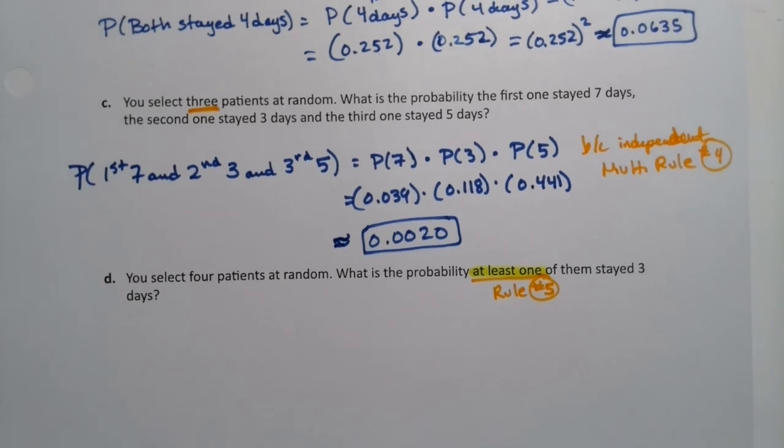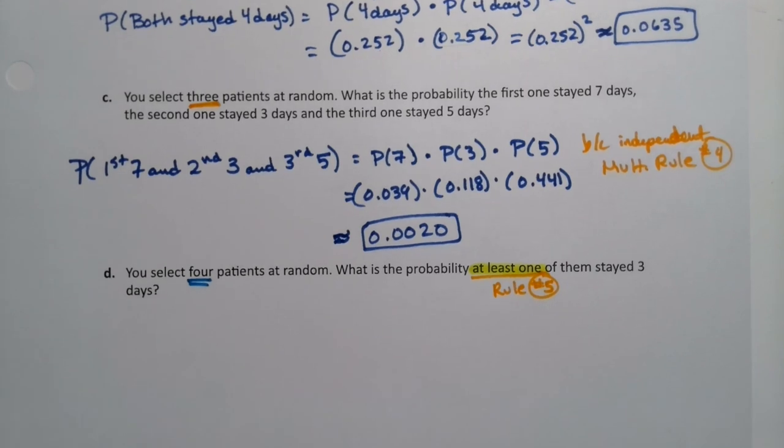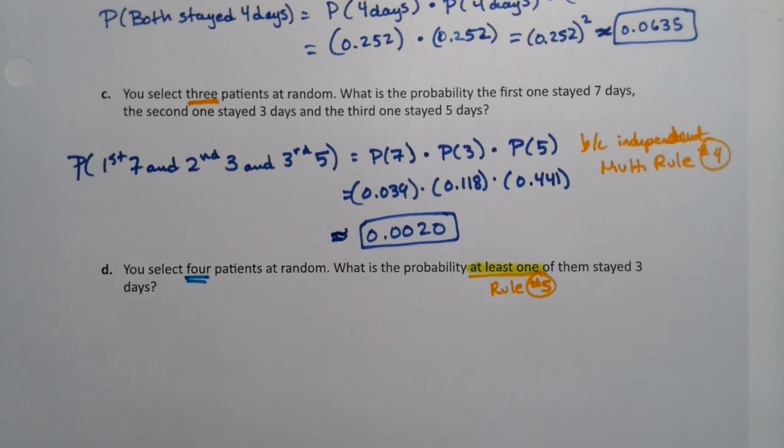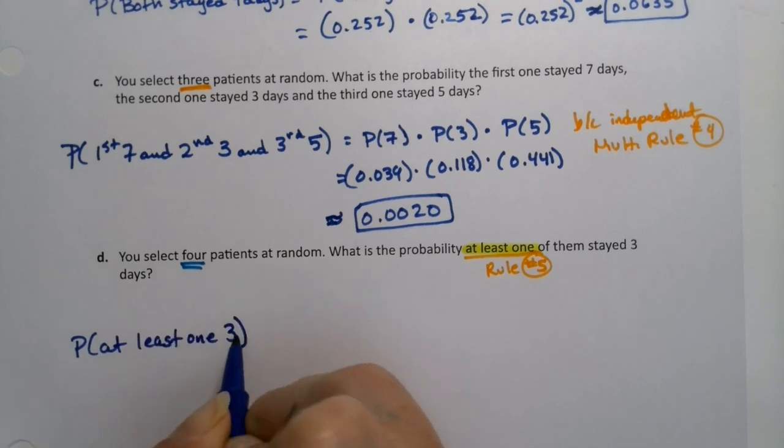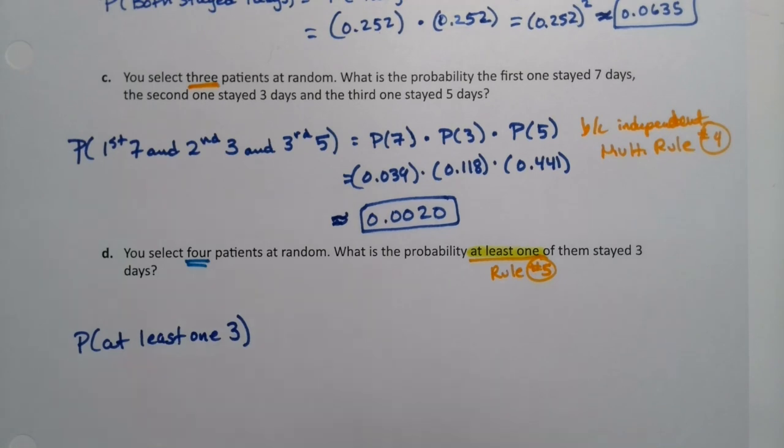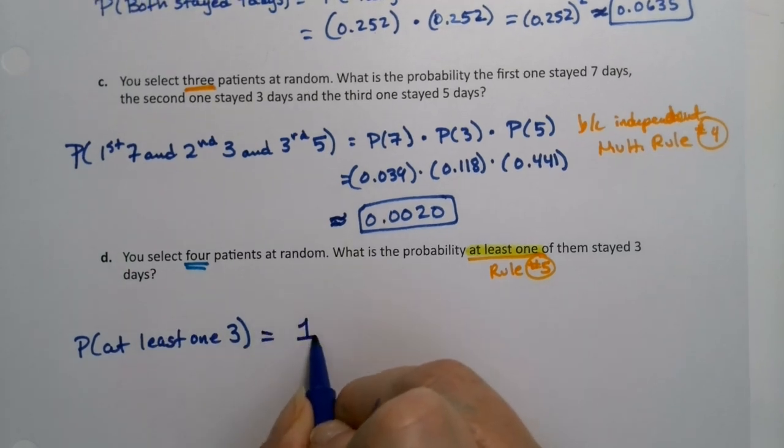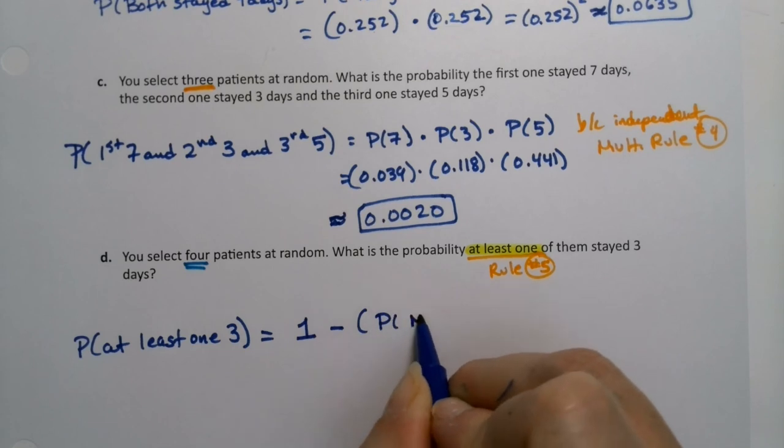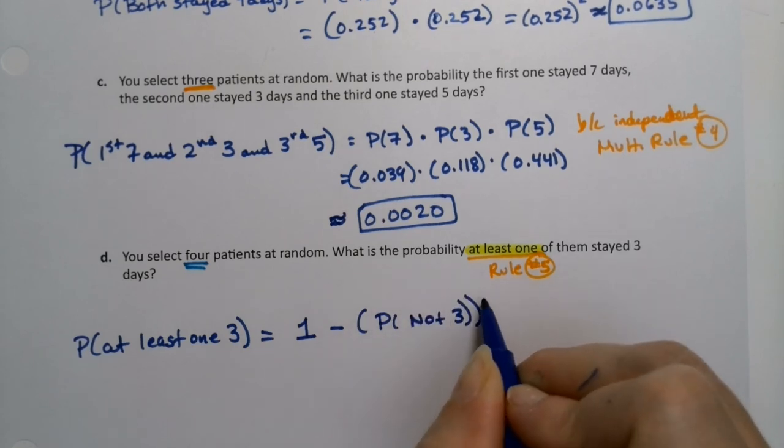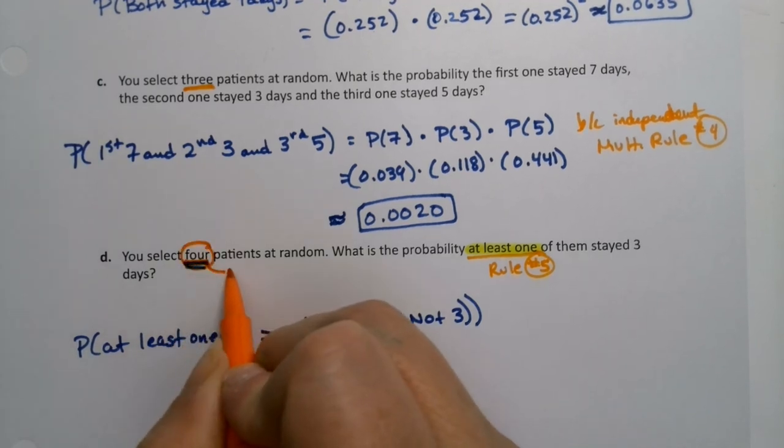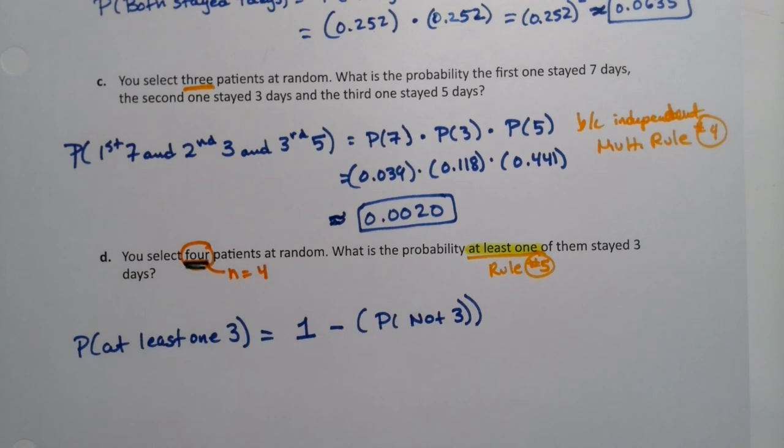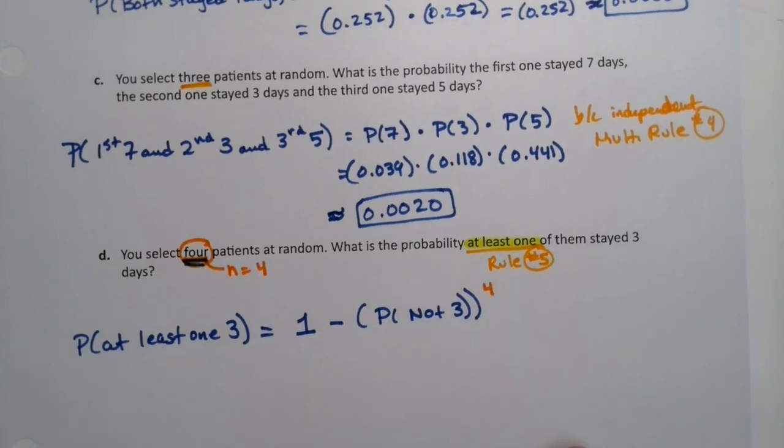All right. How many patients are we selecting? We're selecting four patients. Okay. So that means we want the probability of at least one three. According to that rule would be one minus the probability of not three to the n power, which for us, n is right here, n is four. So I'm going to raise it to the fourth power right there.